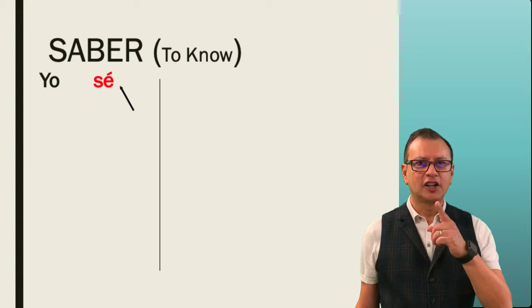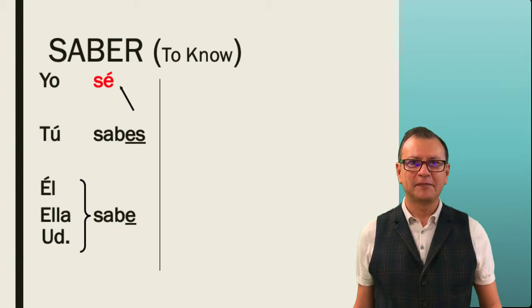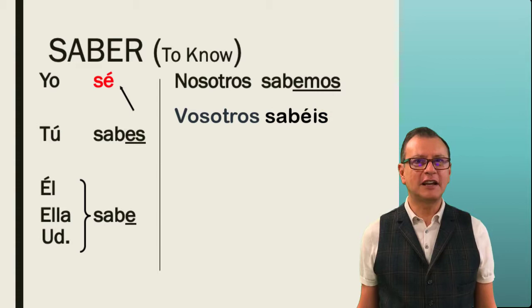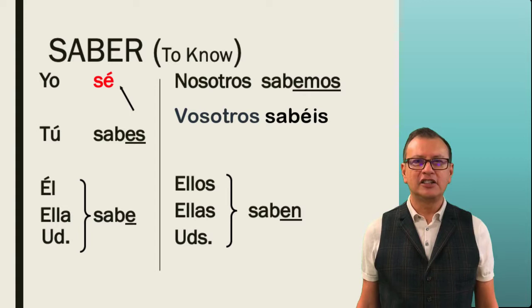Yo sé. Tú sabes. Él, ella y usted sabe. Nosotros sabemos. Vosotros sabéis. Ellos, ellas, ustedes saben. You see how irregular this verb is?